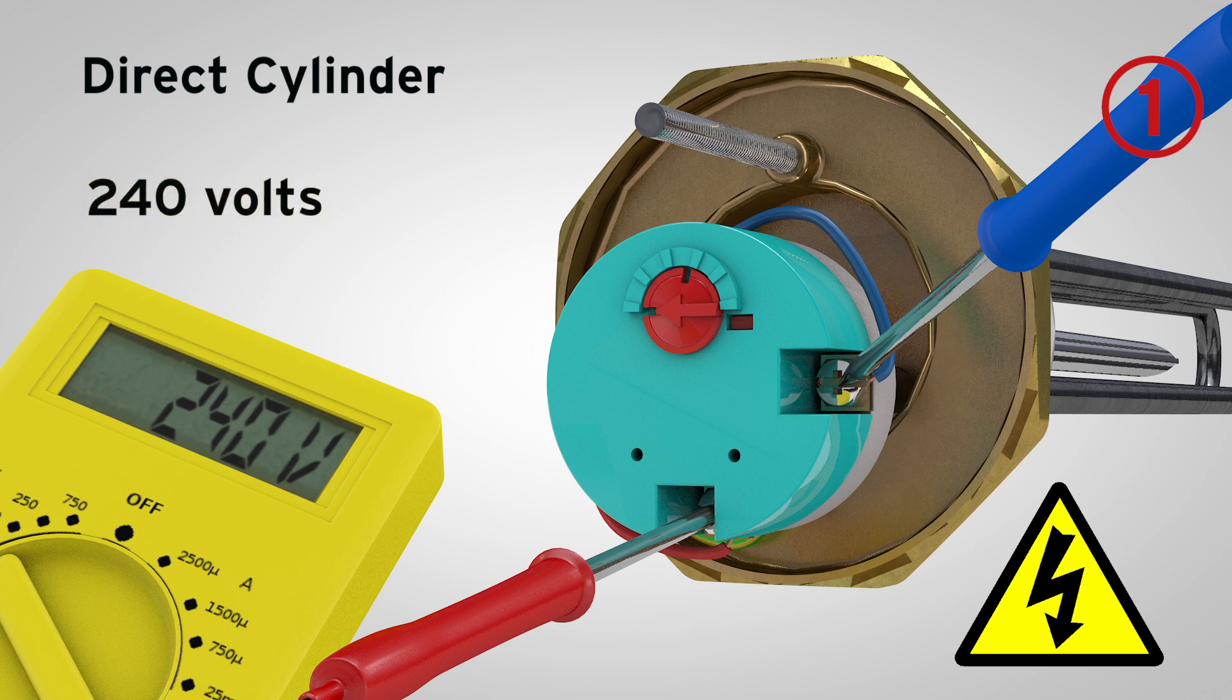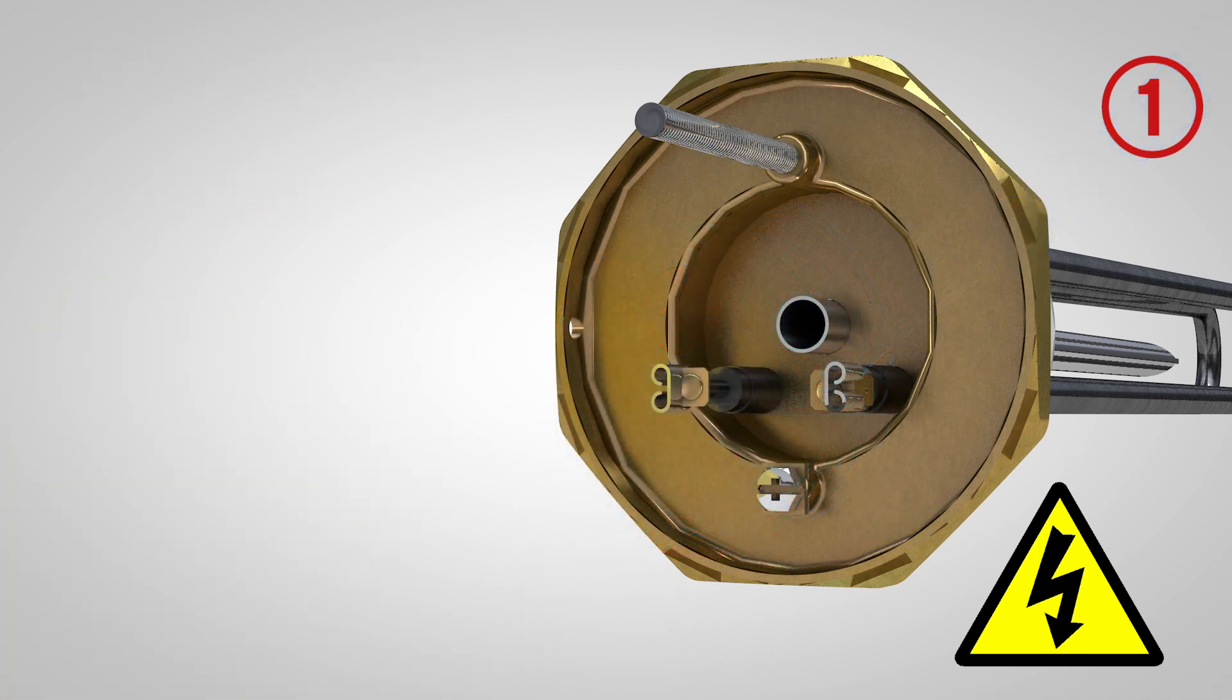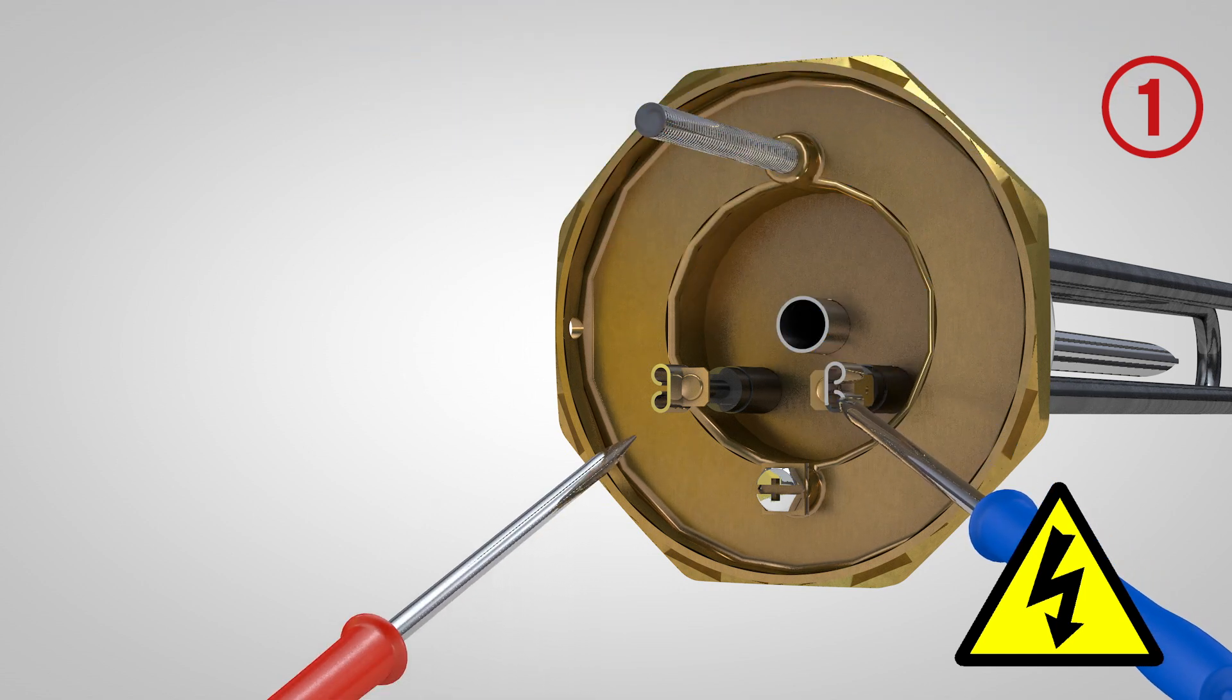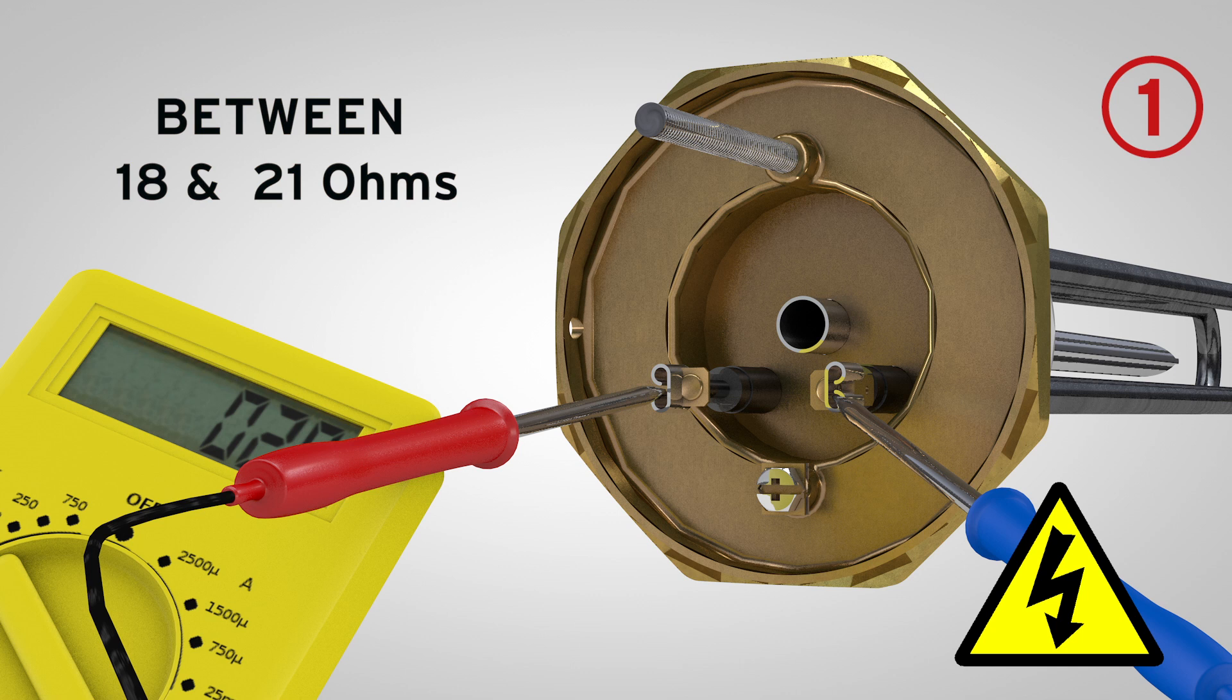If the power supply is okay, you will need to move on to check the immersion heater. You can diagnose the immersion heater has failed by measuring the resistance between the two posts on the immersion with a multimeter. The reading should be between 18 and 21 ohms, or the immersion has failed and will need replacing.